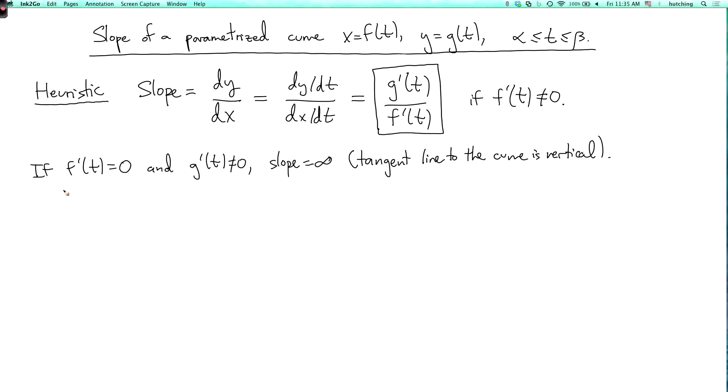If f prime of t and g prime of t are both zero, then we actually don't know anything. It's possible that the curve doesn't have a well-defined slope at this point, or it might have a well-defined slope, but we just can't figure it out this way. For example, you could have some curve where you're just moving along a straight line, and then you stop for a while, and then both f prime and g prime are zero, and then you keep going. So at that time when you're stopping and resting, f prime and g prime will be zero, but the slope will still be defined.